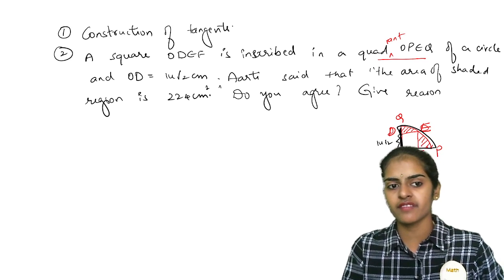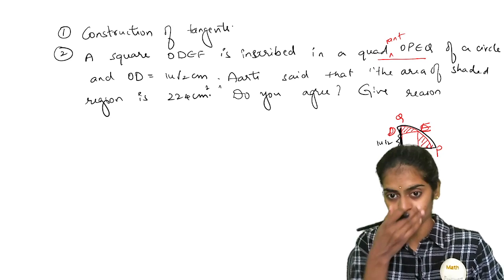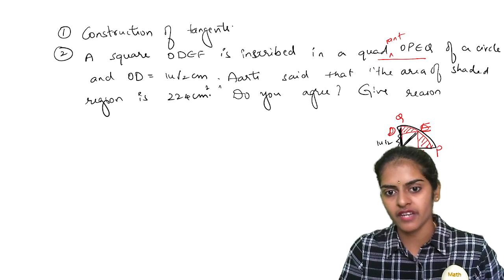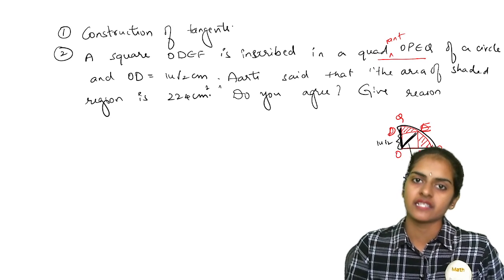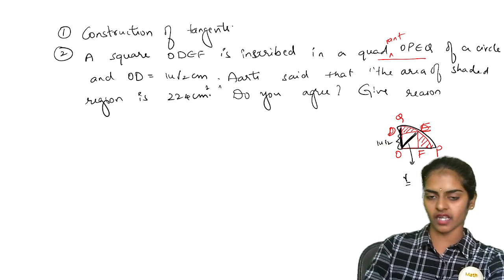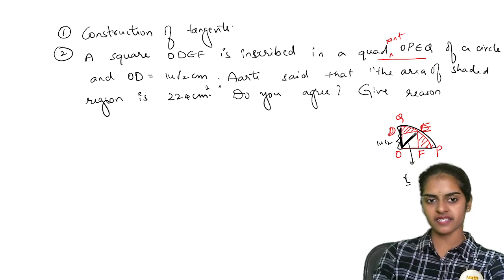So you need to find the area of the shaded region. So side of the square is given to you. If you find OE, you will get the radius of the semi-circle. I hope it is clear for you now. If you see OE, you will get the radius of the semi-circle.